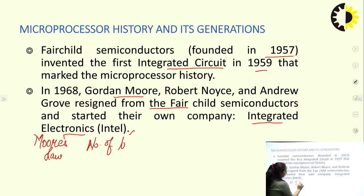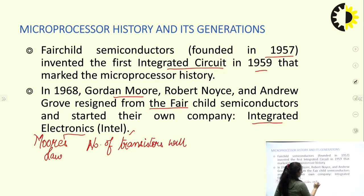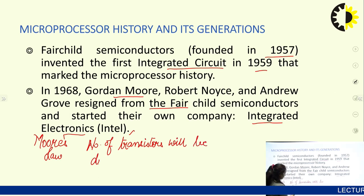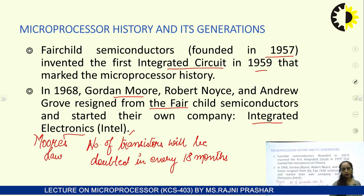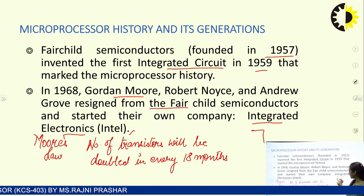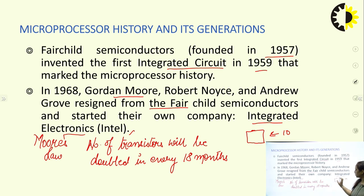Moore's Law states that the number of transistors on a small IC will be doubled every 18 months. So if initially we have 10 transistors on the same size IC, after 18 months it will be 20, then 40, then 80, and so on — exponential growth of components is seen with this law.